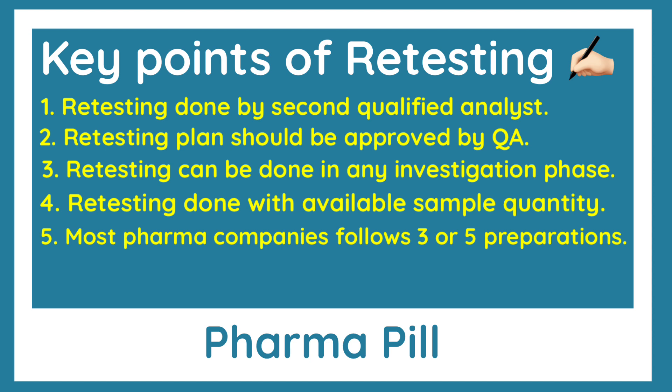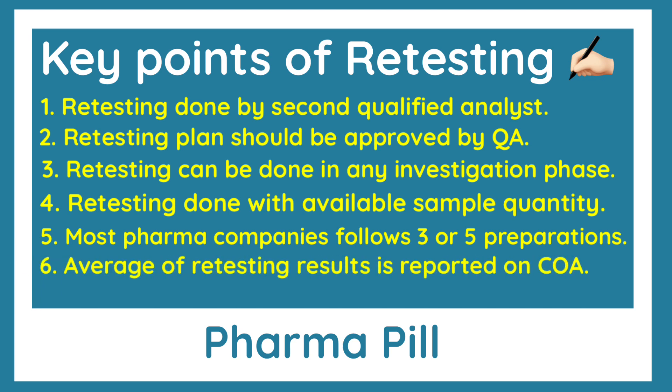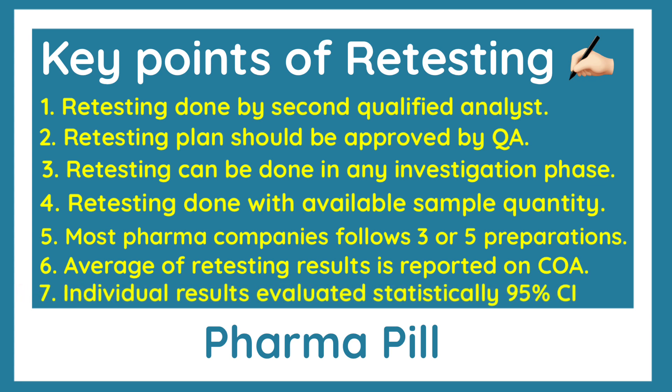Most pharma companies follow either three preparations or five preparations during retesting, and the number of preparations is decided based on the analytical method validation data and the criticality of the analytical technique. As a rule of thumb, the average of retesting results is reported on the final COA. Before that, all the individual results are evaluated statistically using the 95% confidence interval limit.